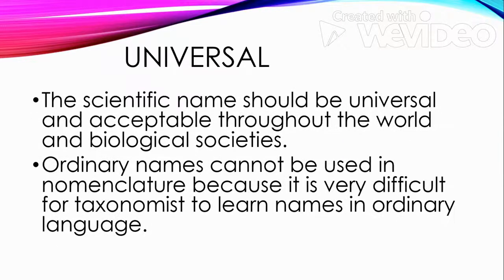Next, universal: the scientific name should be universal and acceptable throughout the world and biological societies. Ordinary names cannot be used in nomenclature because it is very difficult for taxonomists to learn names in ordinary language, and ordinary names of an organism may vary from one place to another depending on the language being used.